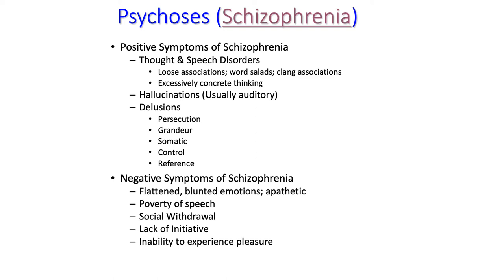They'll often speak in what's called word salads, stringing together words and sentences that don't make any sense. They may also engage in clanging, where the words they say are just a string of things that rhyme — they say things because of how they sound, not because of any specific meaning they're trying to communicate. Their thinking can also be excessively concrete; they may lose the ability to grasp subtle linguistic things like sarcasm or metaphors.